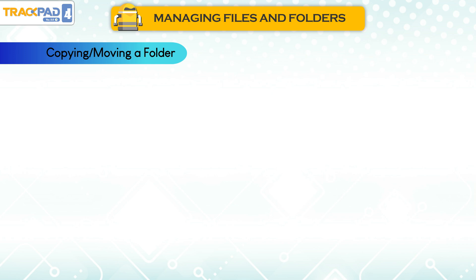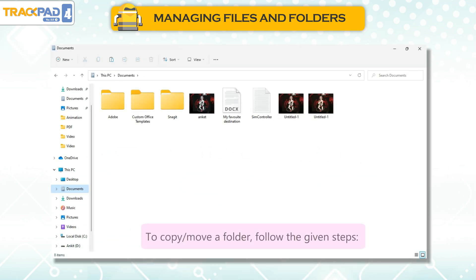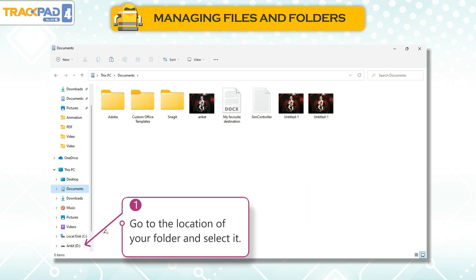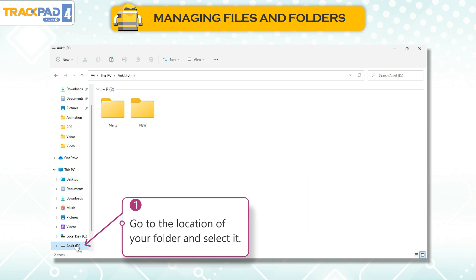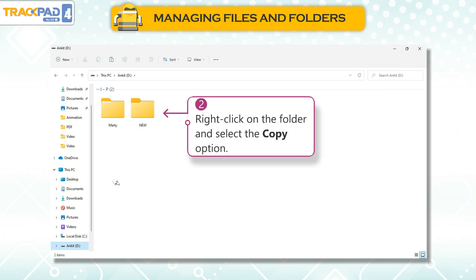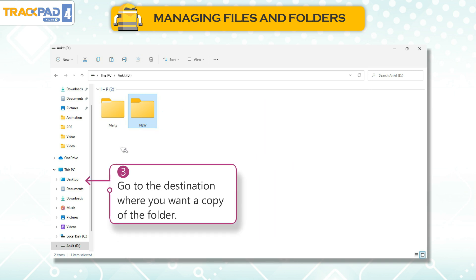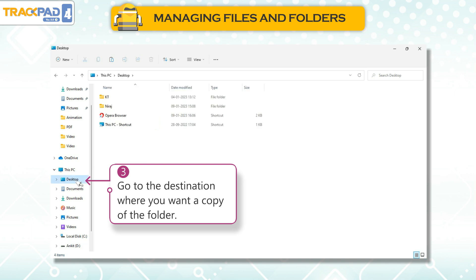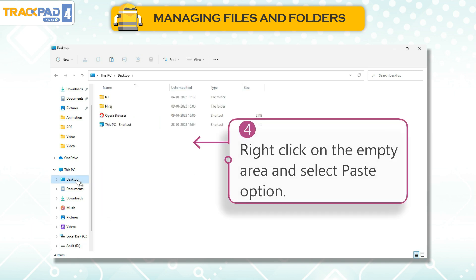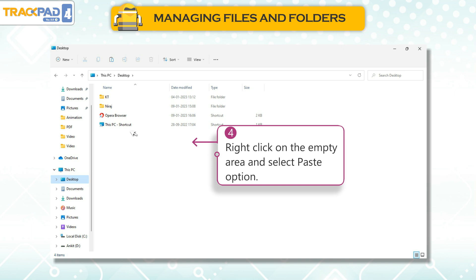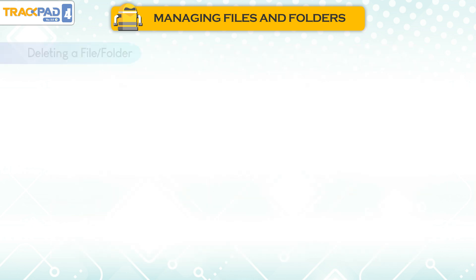Copying or Moving a Folder. To copy or move a folder, follow these steps: 1. Go to the location of your folder and select it. 2. Right-click on the folder and select the Copy option. 3. Go to the destination where you want a copy of the folder. 4. Right-click on the empty area and select the Paste option.